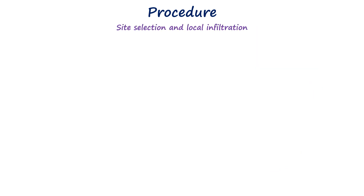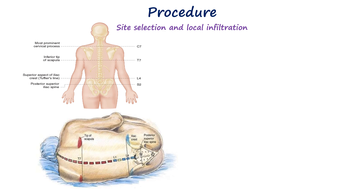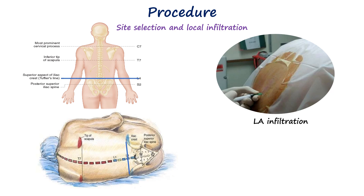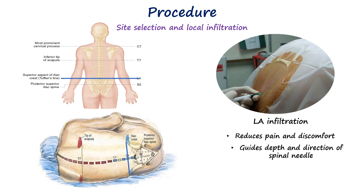Once the patient is draped, the appropriate intervertebral space is selected, most commonly using Tuffier's line, which connects the highest points of the iliac crests and usually corresponds to the L4 spinous process or the L4-L5 interspace. After identifying the desired level, the skin and subcutaneous tissue are infiltrated with approximately 2 mL of 2% lignocaine, ensuring negative aspiration for blood before injection. This local infiltration minimizes discomfort during subsequent needle insertion and helps confirm the intended direction and depth of approach.